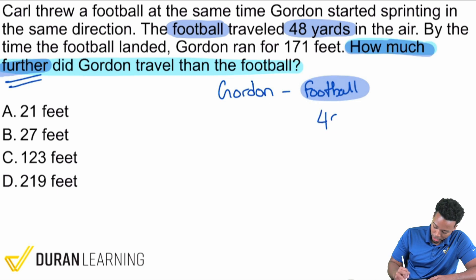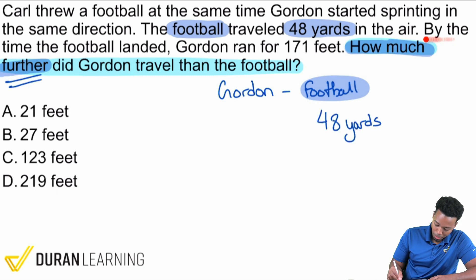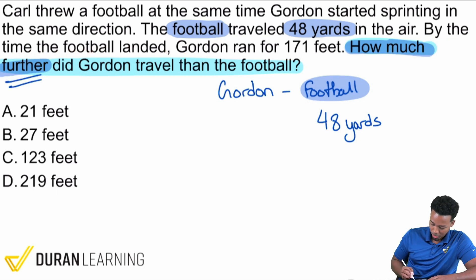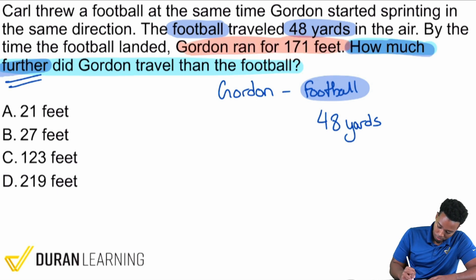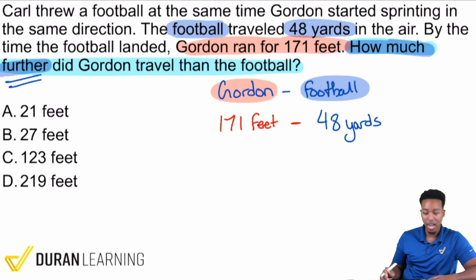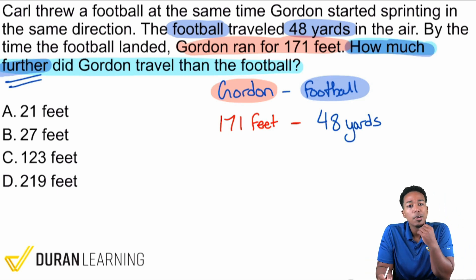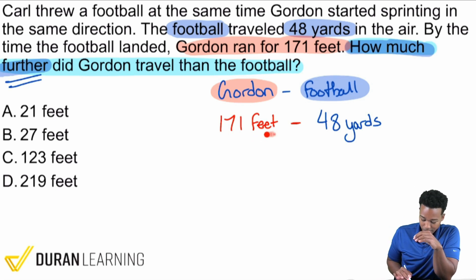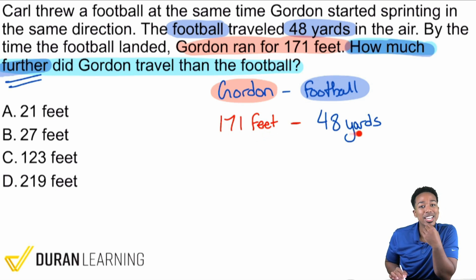Right here, that's 48 yards for the football. And then, by the time the football landed, Gordon ran 171 feet — I'll use red for that. Gordon ran 171 feet. But notice: Gordon is 171 feet, and the football is 48 yards. Be very careful there — those are different units.